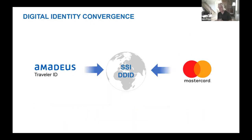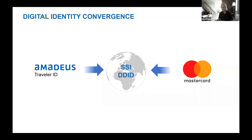Two centralized digital ID projects are also making their way to market. Amadeus with its Traveler ID products and MasterCard have both identified digital identity as a commercial opportunity. Both have publicly stated their interest to follow — possibly to migrate to — decentralized digital ID technologies when practical and available.